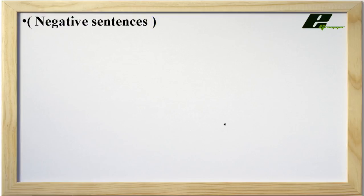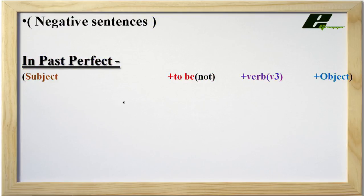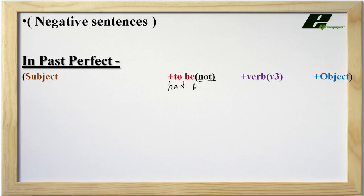Now let us see negative sentences in past perfect tense. The formula is the same: Subject + to be + verb 3 + object. Exactly after the helping verb 'had', we are going to add NOT, and that sentence becomes a negative sentence. The remaining part will remain as it is.